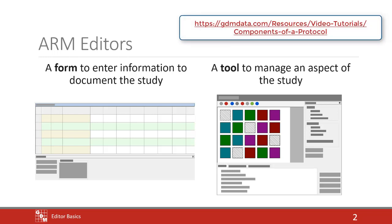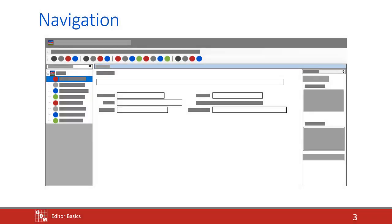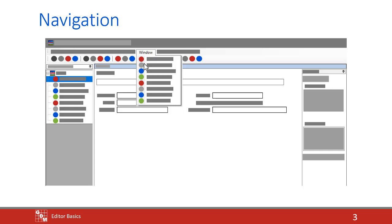The different functions of these specific editors are discussed in another video. There are three ways to navigate between editors when a study is open. The Window menu includes all editors, and those that are not available in the current study are grayed out.